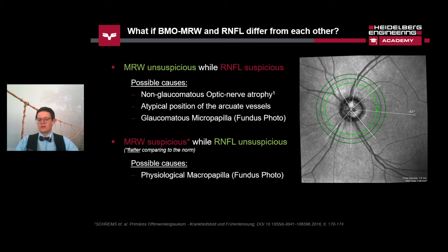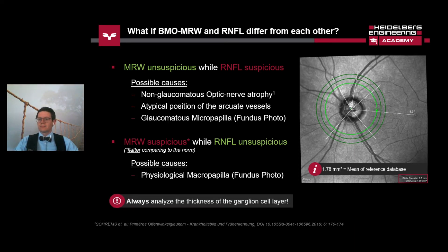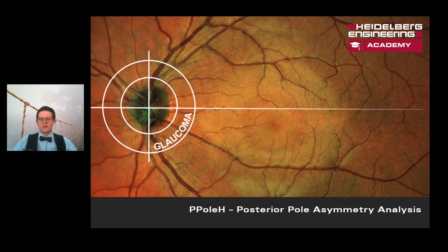As an important reference value, the mean of the reference database for the Bruch's membrane opening center is 1.78 square millimeters, and you can always see the Bruch's membrane area at the bottom right in your infrared image. If you have suspicious and unsuspicious values that you cannot reconcile, it is always important to analyze the thickness of the ganglion cell layer. Let's take a step away from the optic nerve head and see what we can analyze around the macula using the posterior pole scan.